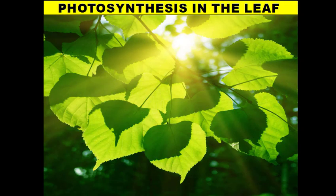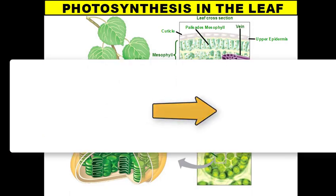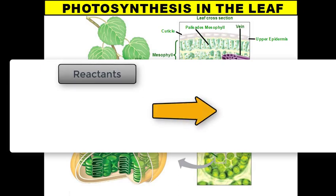Welcome to our vodcast on photosynthesis in the leaf. In this vodcast we're going to discuss the process of photosynthesis in terms of the reactants involved and the products that are made, and then we're going to discuss how the leaf is structured to carry out photosynthesis. So first let's talk about the chemical equation for photosynthesis. On the left-hand side of the arrow you have what are called your reactants — the raw materials that are reacted together to produce the materials on the right side of the arrow, called the products.